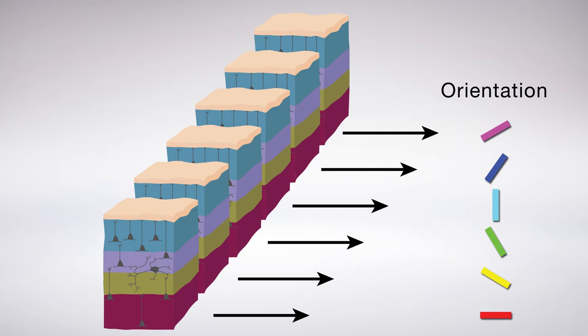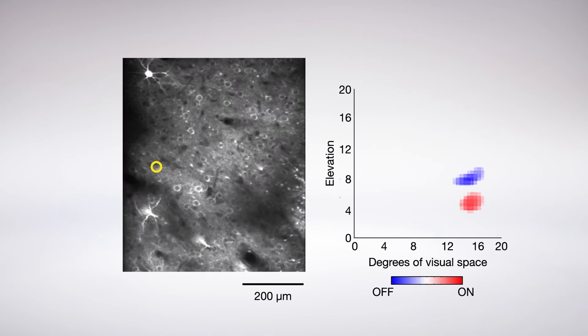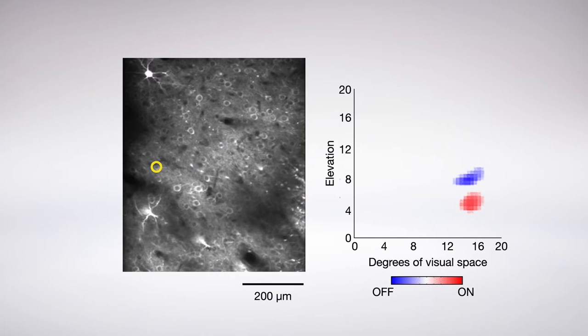To find out how these different mapping systems come about at the same time in the same cells, researchers used an advanced imaging technique to view the on and off response regions in hundreds of individual cortical neurons in the tree-shrew brain.